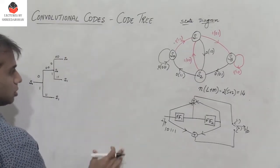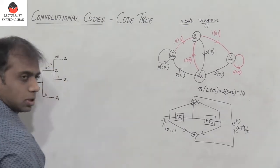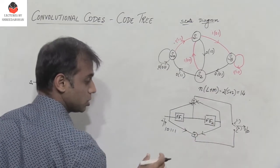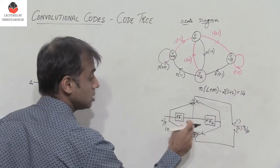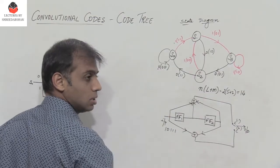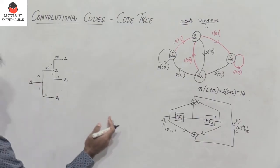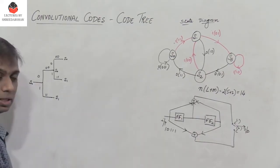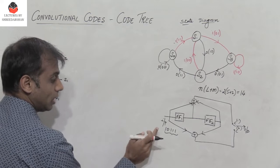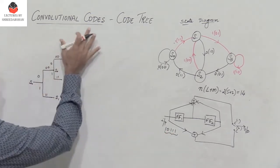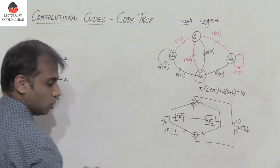I can complete the code tree for a number of stages. For a 5-bit input, each input bit produces 2 output bits, so I need 7 stages total — 5 stages for the 5 input bits, plus 2 extra stages because there are 2 flip-flops requiring 2 zeros to be fed in. I will only complete the portion of the code tree corresponding to input 10111.